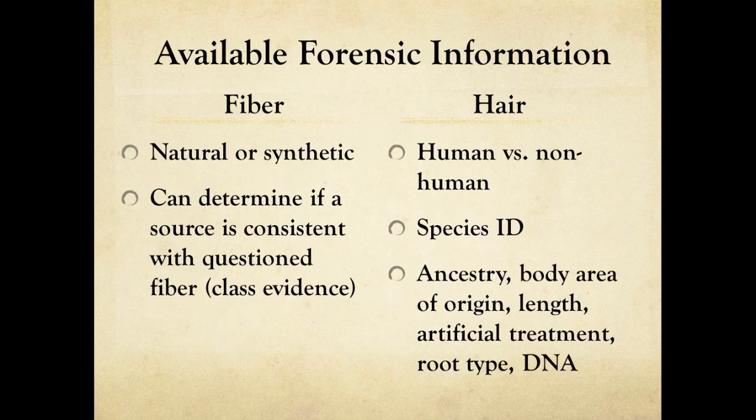I want to briefly explain what kinds of information can be gathered from hair and fiber evidence. With fibers, you can determine whether it is a natural or man-made fiber. Man-made fibers are commonly called synthetic. Forensic scientists can compare a questioned fiber with a potential source to determine if the fiber is consistent with that source. Fibers are always class evidence, meaning they cannot be identified to a specific source.